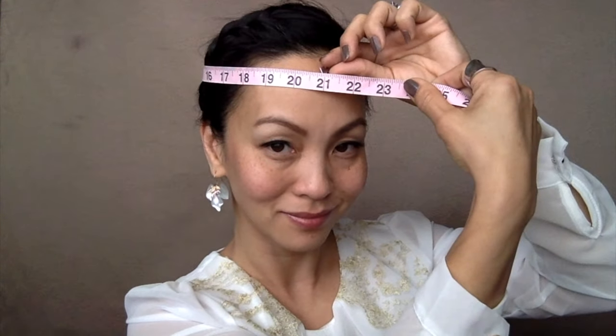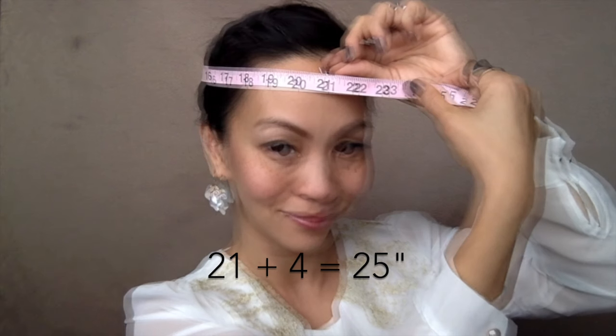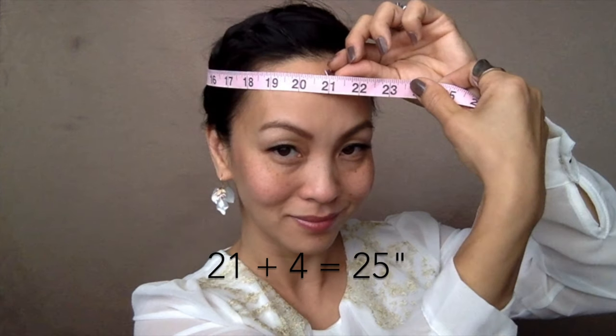First you are going to measure the circumference of your head and then add 4 inches. So mine is 21 plus 4 equals 25 inches. This will be the total length you will need.